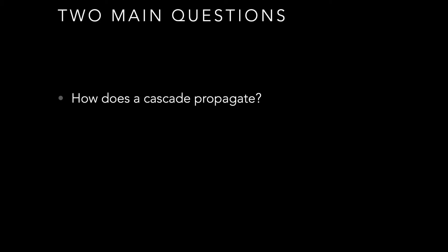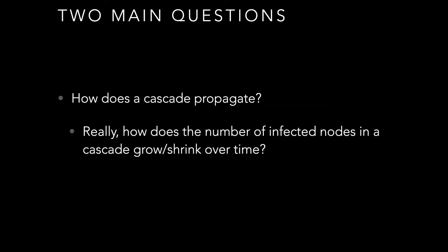When talking about cascades, there are two main questions that come up. One is how does a cascade propagate, or how do we model that — which really reduces to how does the number of infected nodes in a given graph grow or shrink over time. And then, depending on your perspective and context, what stops a cascade in terms of graph structure or behavior.